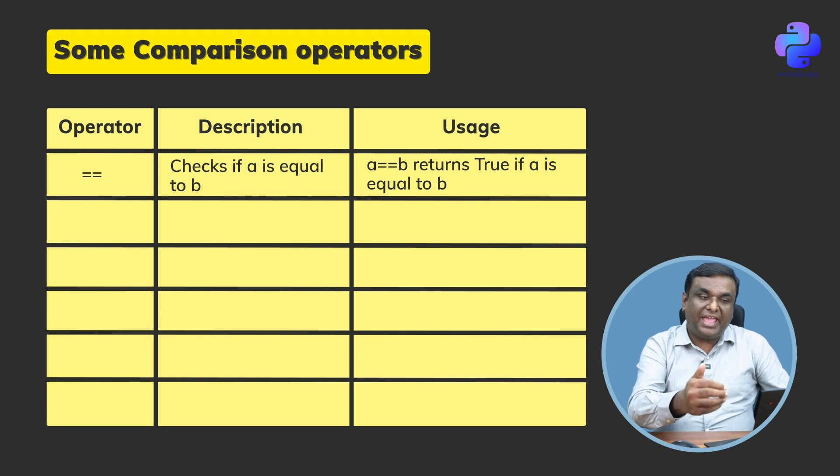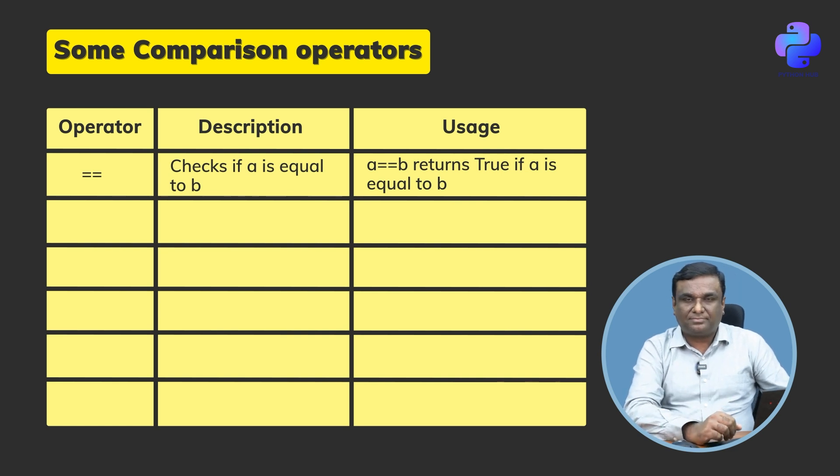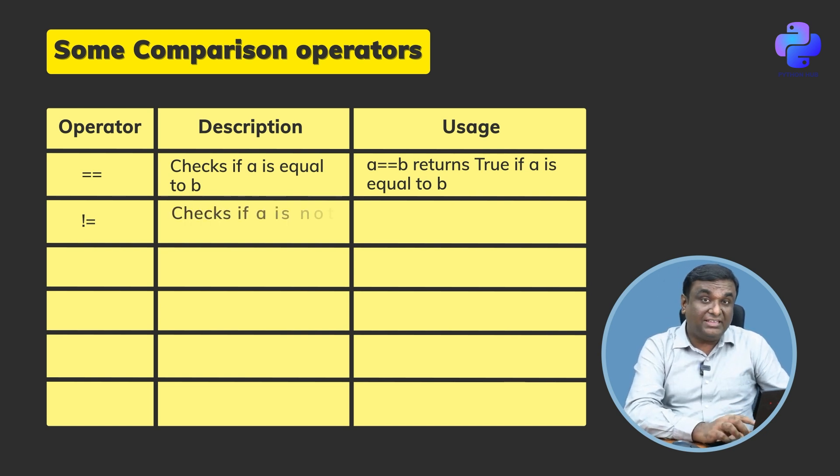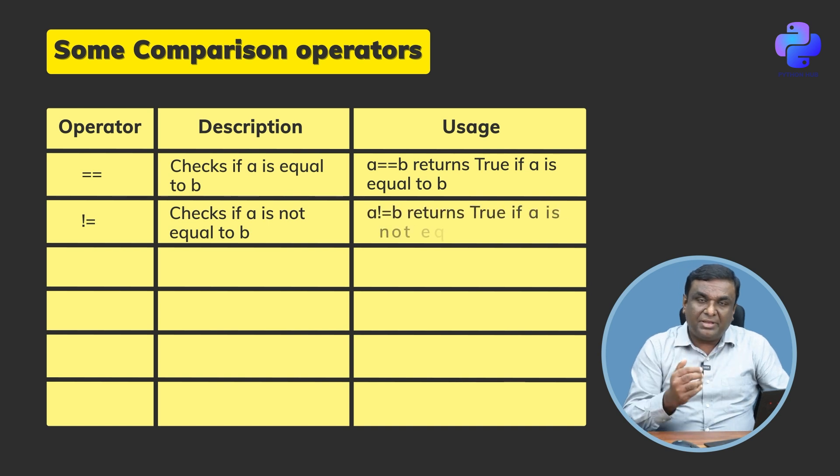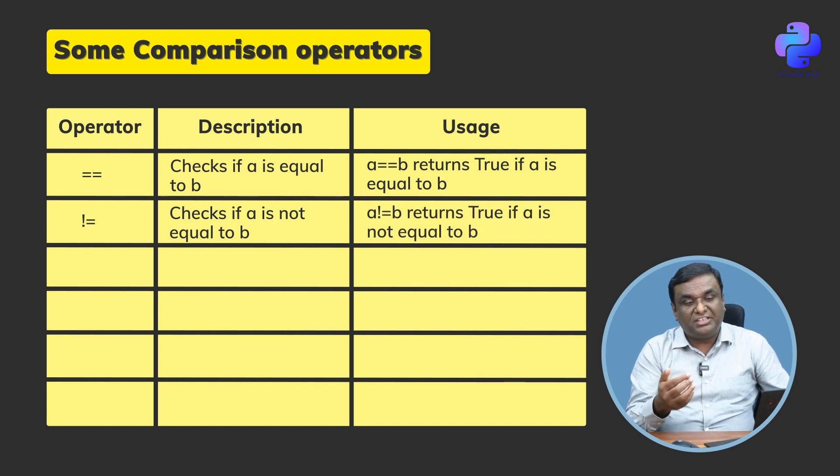Exclamation operator and equal to checks whether a is not equal to b. If a exclamation operator equal to b returns true, that means a is not equal to b.